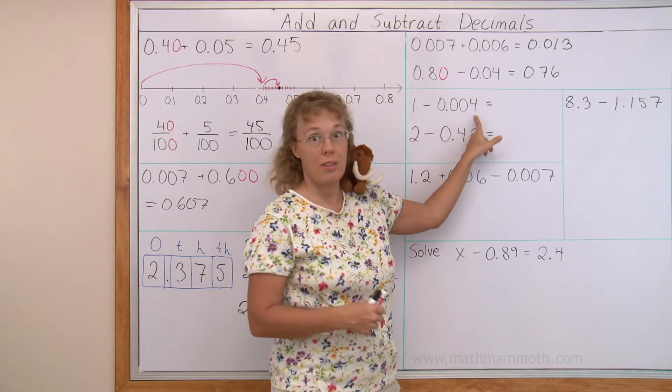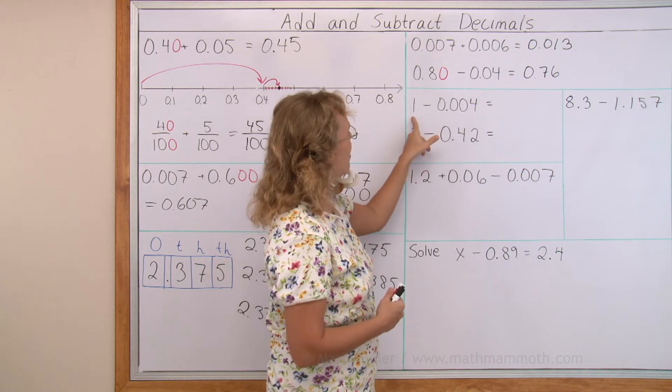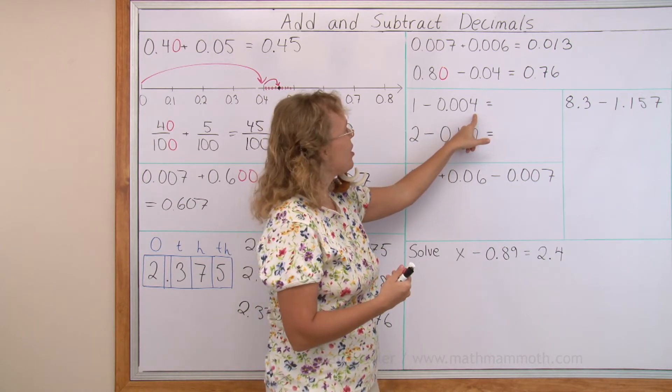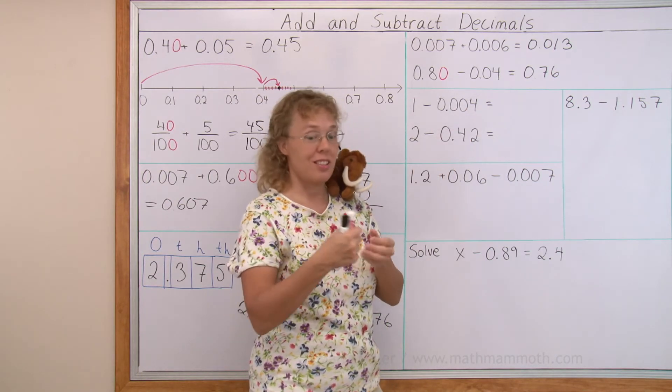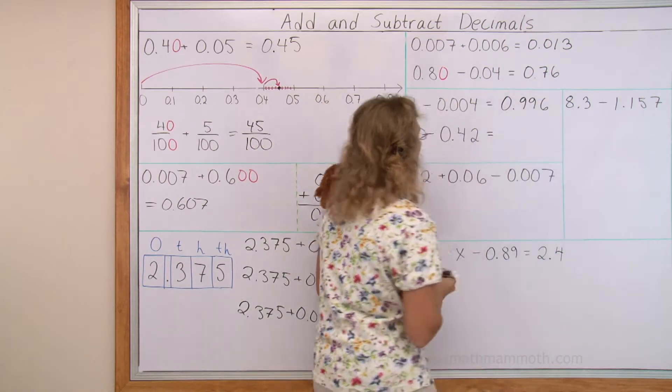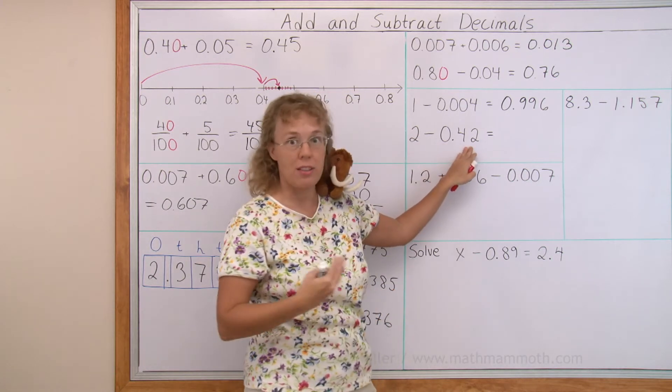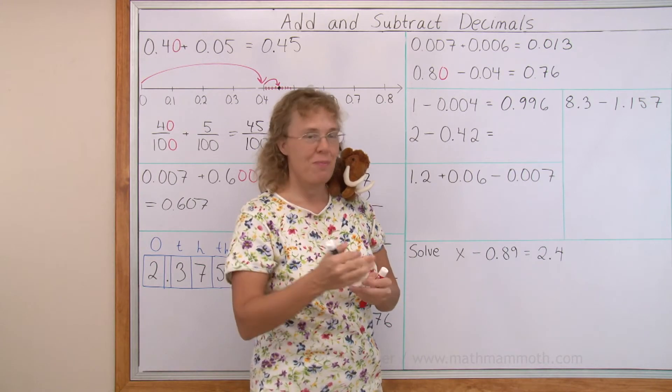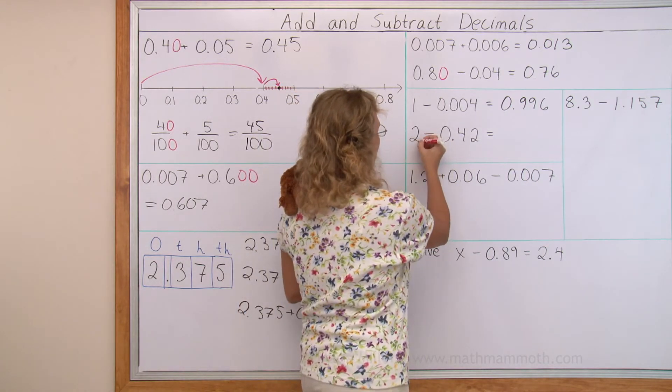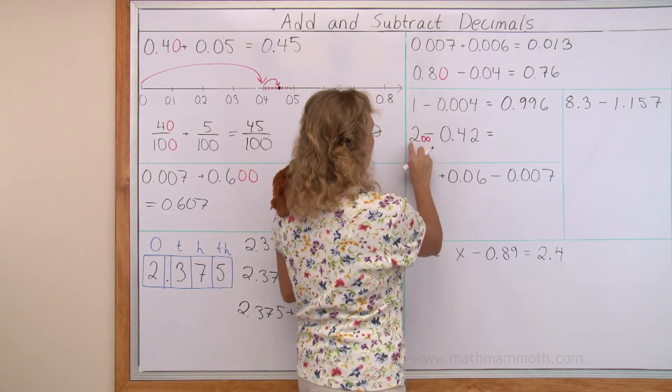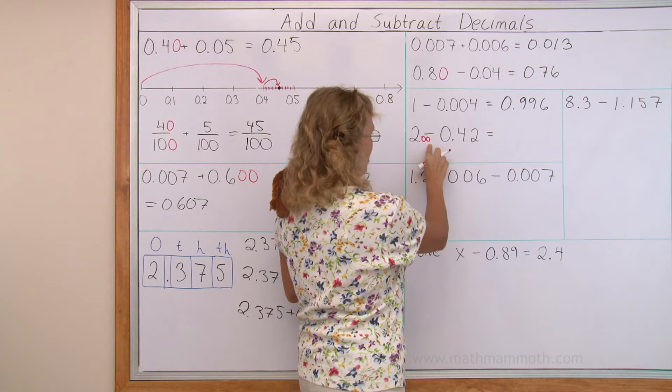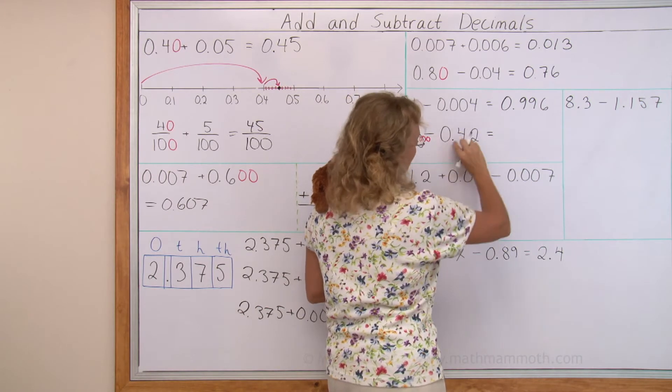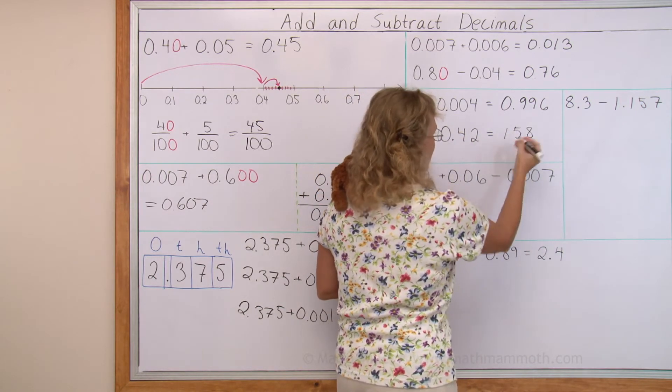One minus four thousandths. Think of this one as a thousand thousandths, and then we have take away four of them. So we get nine hundred ninety-six thousandths. Two minus forty-two hundredths. Again, you can think of this two as two hundred hundredths. If you want to, I can put these two decimals here. Think of it as 2.00. Two hundred hundredths minus forty-two hundredths. So we have one hundred fifty-eight hundredths, 1.58.